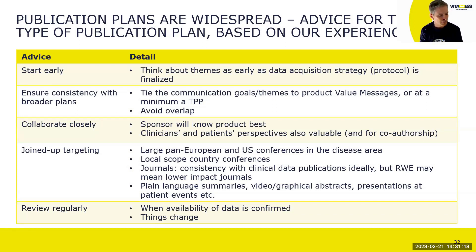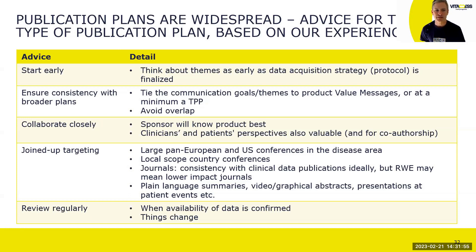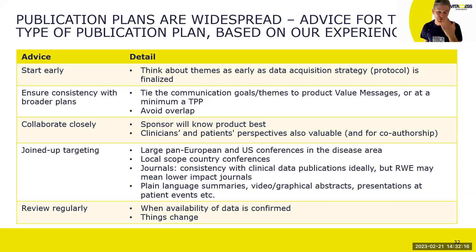People typically want the highest-impact global events, but for real-world evidence studies you may need lower-impact journals than you might wish for. There may also be requests for dissemination at a national level, which is actually good news if you've generated data across many countries. All of that requires management and targeting. Consistently with our broader theme today: review your publication plan regularly. If you're doing a long-term study, what you're seeing in the data may impact your publication plan — it shouldn't be carved in stone, it should be a living document.